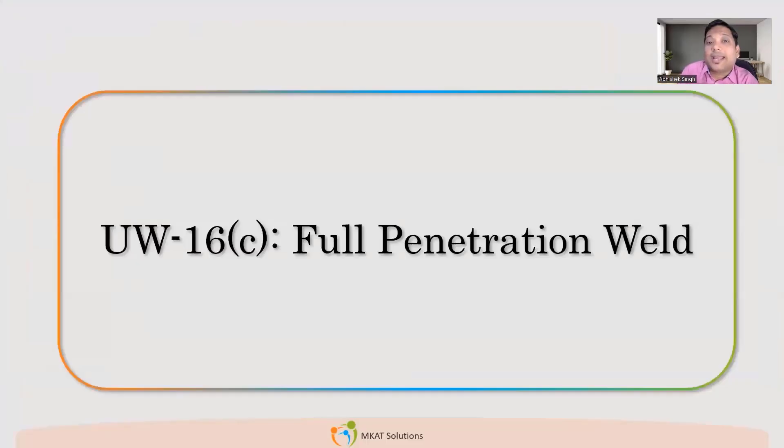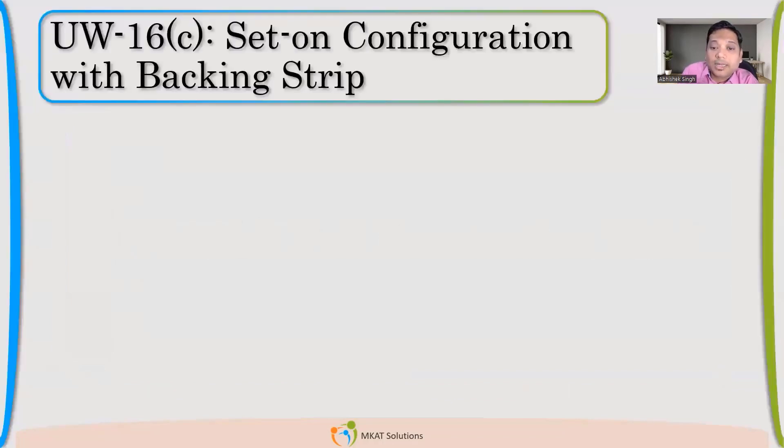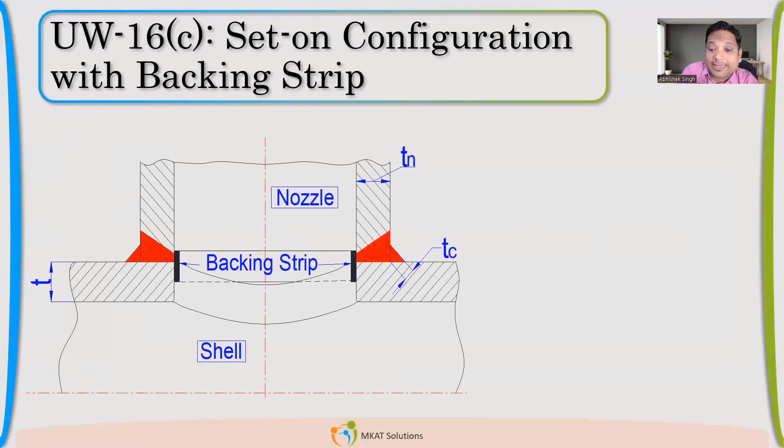So let us first talk about if I have full penetration weld, if I am welding my nozzle with shell by full penetration, then what are the fillet size which we need to maintain? That is what we will be focused on. Now this is a full penetration joint. Now code does not give any requirement related to root gap, root face, the angle of the joint. So whenever we are making full penetration, that is the responsibility of the welding to ensure, to qualify the processor, to ensure that they get full penetration.